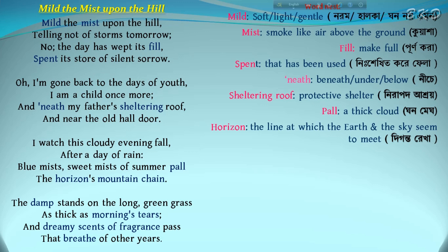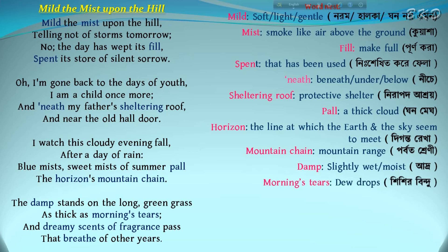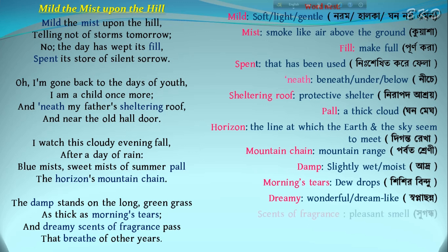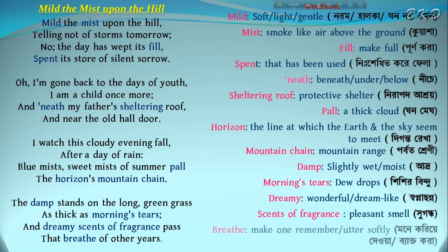The damp stands on the long green grass as thick as morning's tears, and dreamy scents of fragrance pass that breathe of other years. The mist has given the green grass a sense of dampness. This damp on the long green grass is as thick as the dew drops that fall in the morning — the expression 'morning's tears' refers to dew drops. The sweet smell of the damp grass reminds the poet of her early days. The word 'damp' signifies that the poet's mind is being thoroughly soaked in nostalgia.